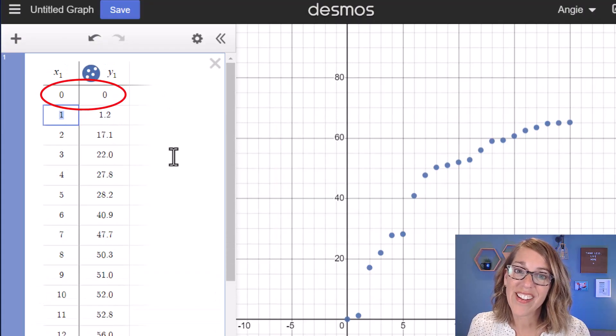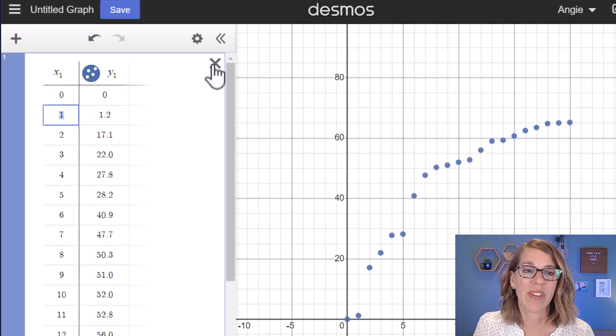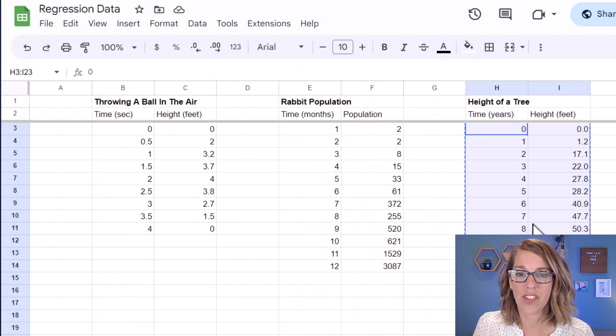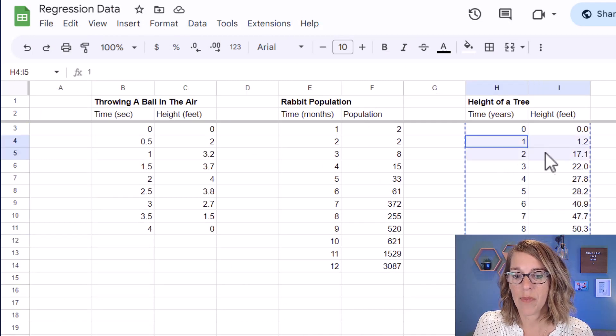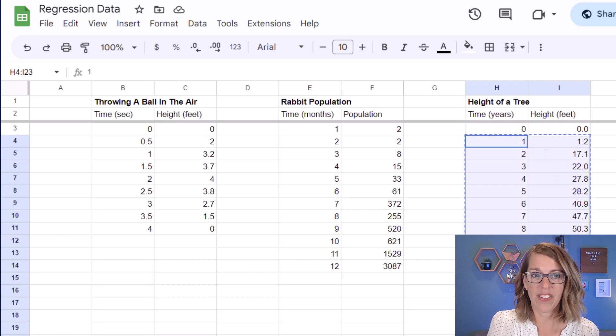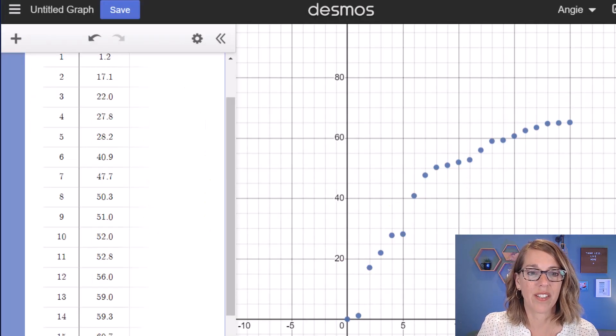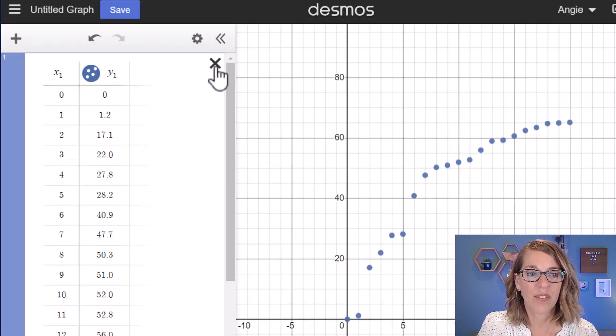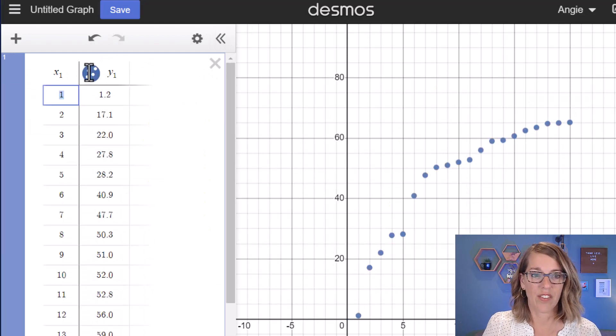This time, let's go grab our data and not include the (0, 0). I'm going to x this out, back to my regression data. And I'm going to instead grab just starting at 1 and then copy this data. Back over to Desmos, I'm going to get rid of the original table and then Ctrl+V.